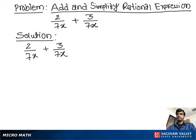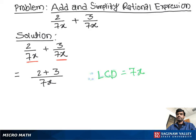As you can see, 7x and 7x appear in both terms, which means they have the same denominator. So our lowest common denominator (LCD) is 7x. We can then write 2 plus 3 over 7x.